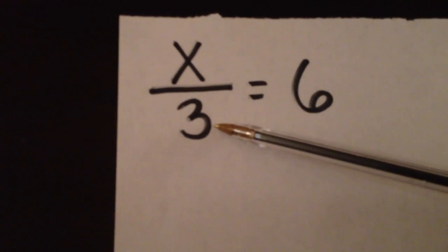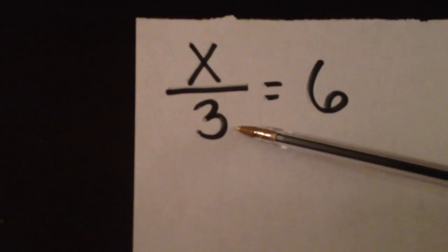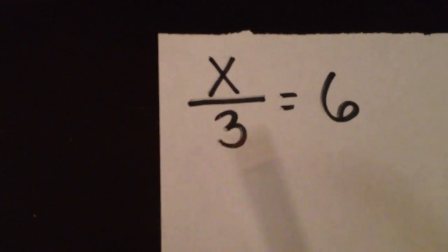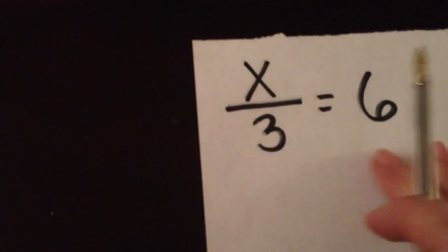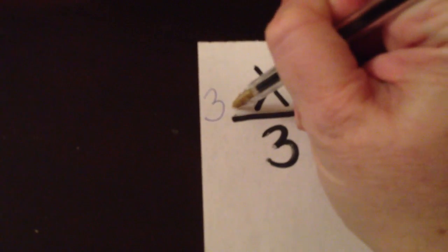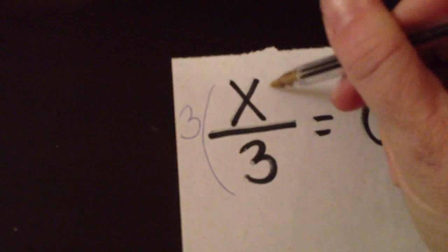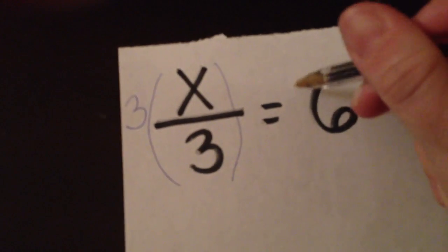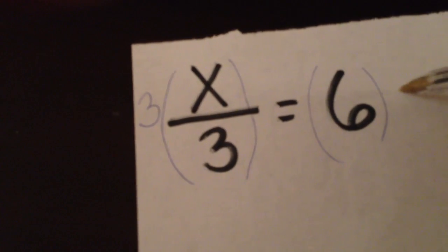Here x is being divided by 3, so we're going to multiply both sides by 3 to keep it balanced. We're going to put 3 over here, parentheses around both sides, and multiply by 3.